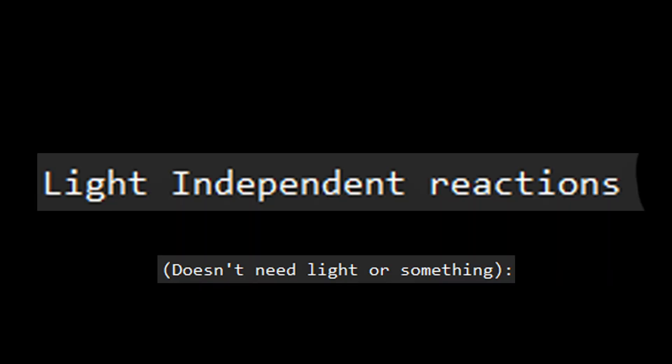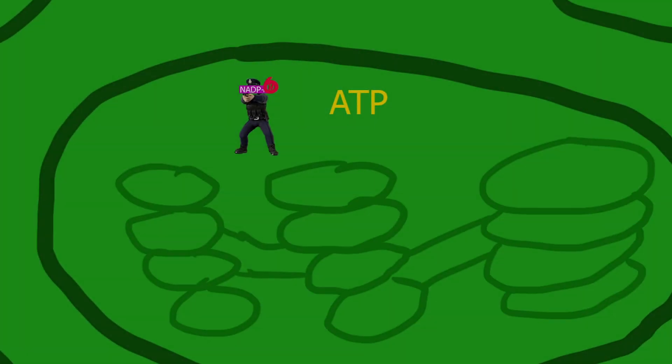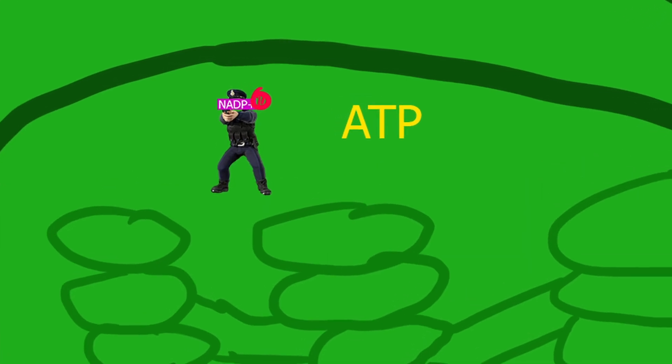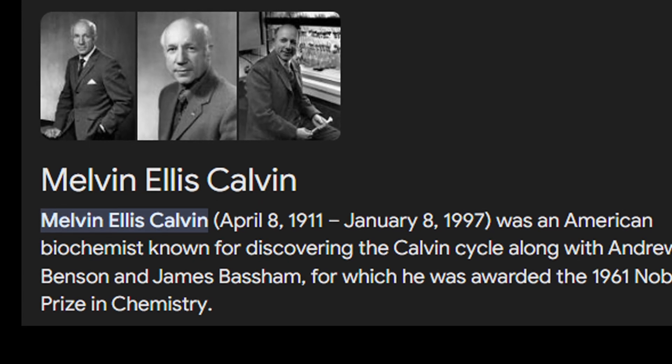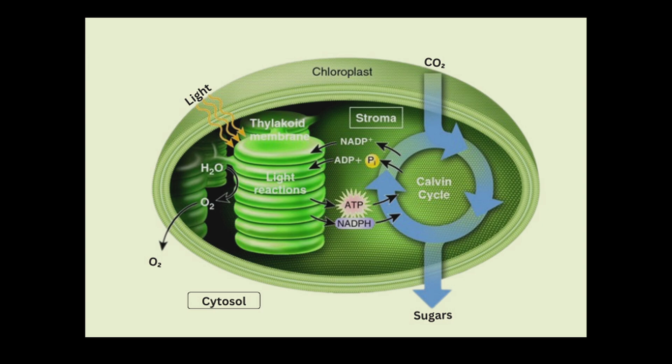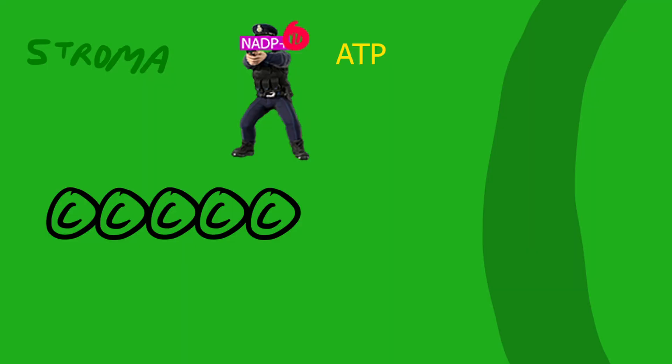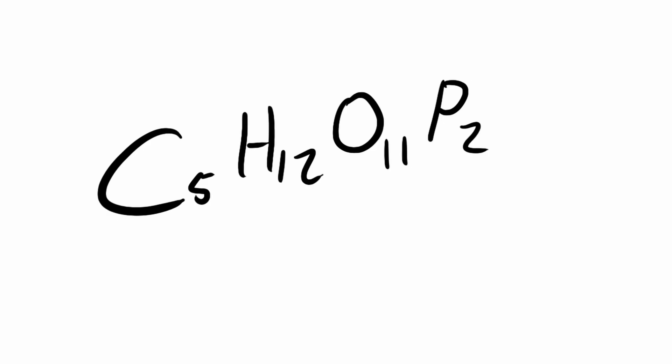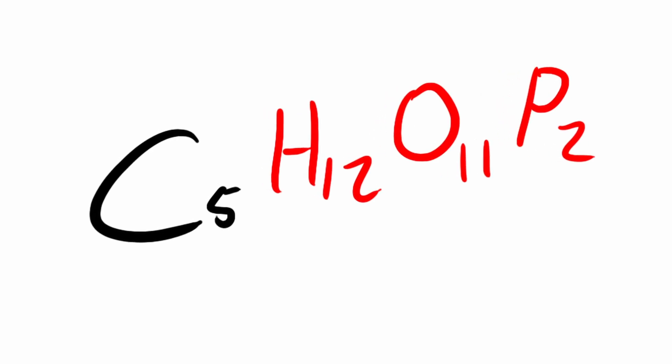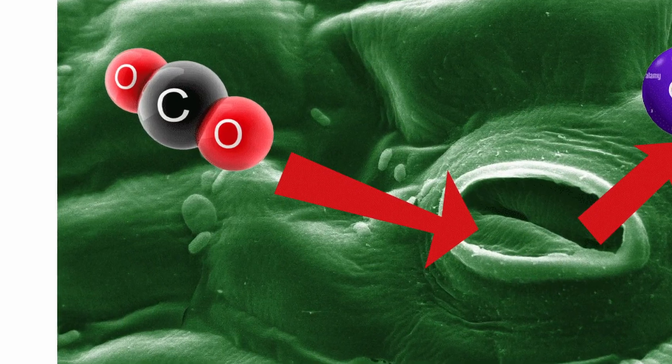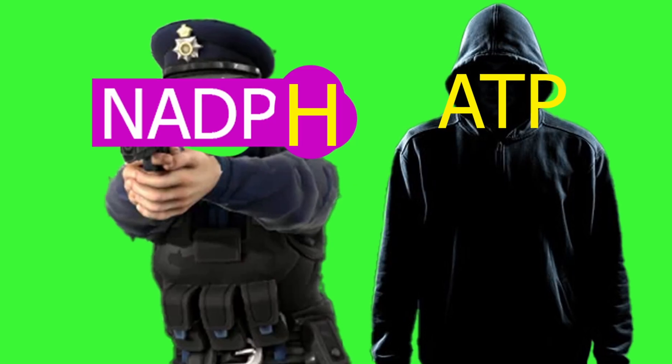Light-independent means it doesn't need light. In the stroma, the fluid outside the thylakoids, some guy named Calvin discovered this cycle. RuBP, a 5-carbon molecule, binds with the CO2 from earlier and becomes 6C. NADPH and ATP can't stand the sight of 6C and decide to beat the shit out of it.